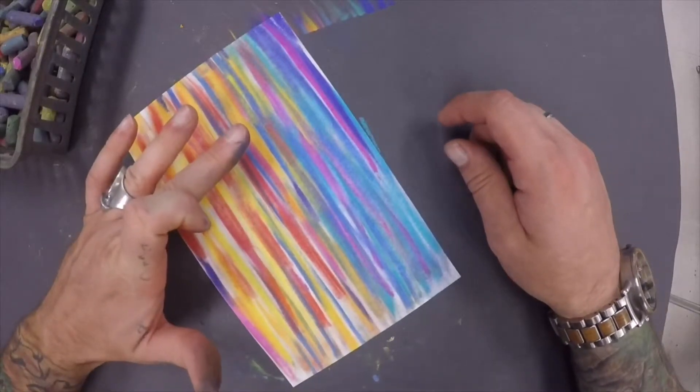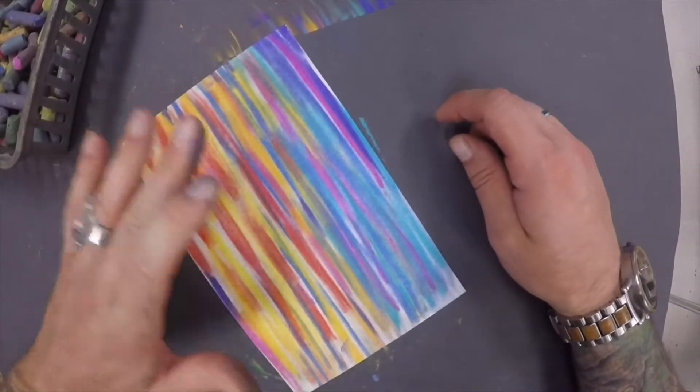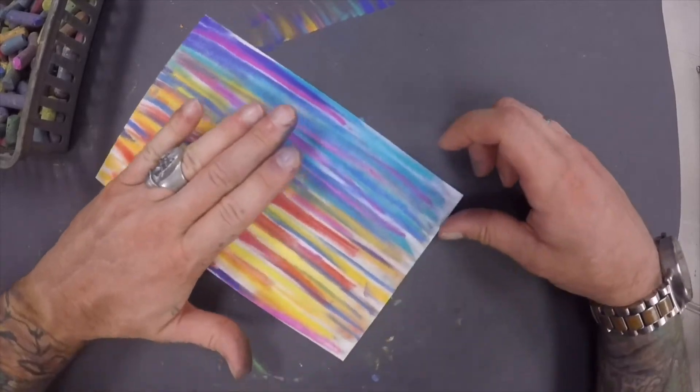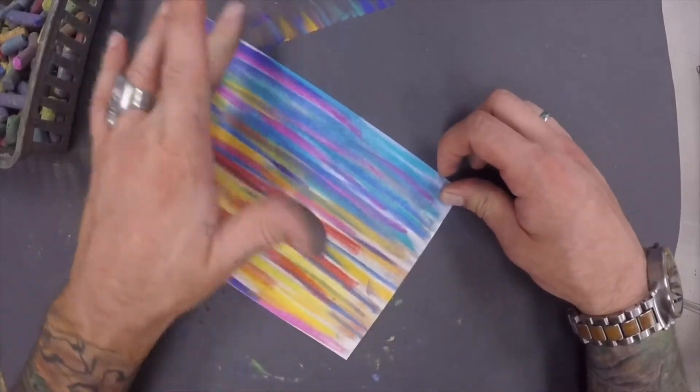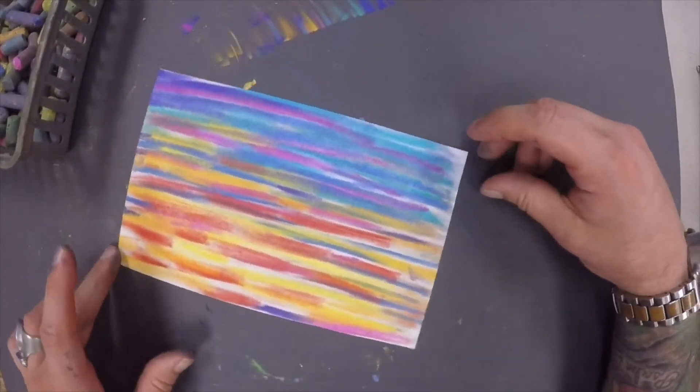If you try to blend this and scrub it back and forth, you're not going to get this nice pretty sky effect. You're going to get multicolored mud, which is not very pretty.